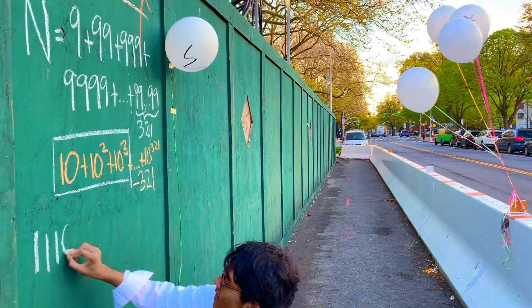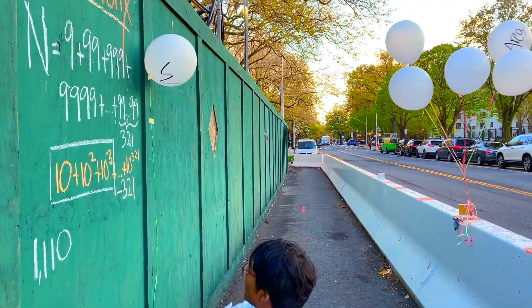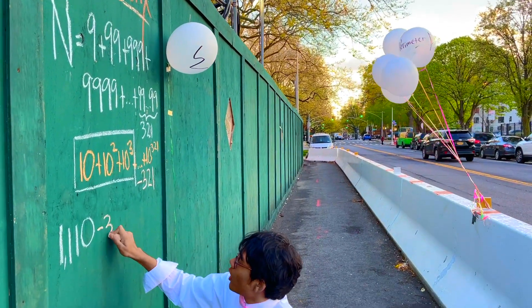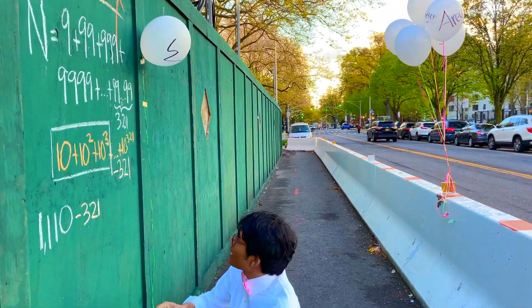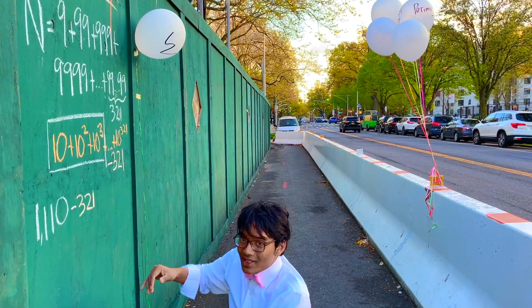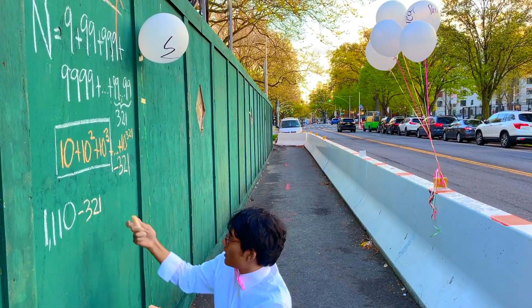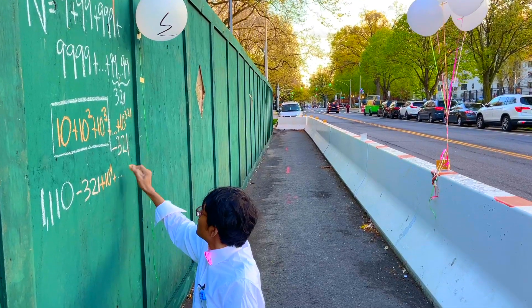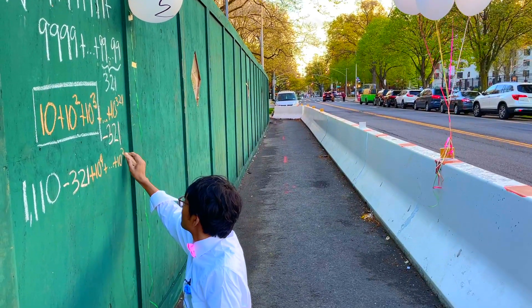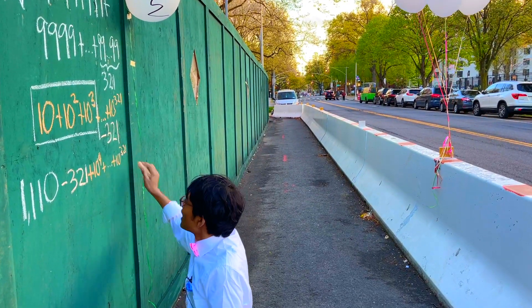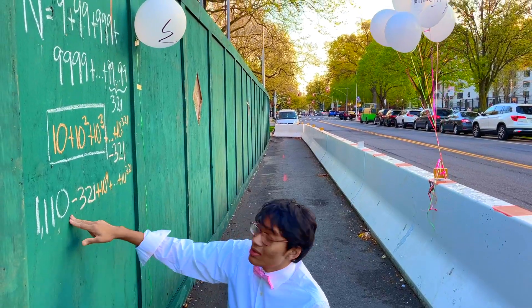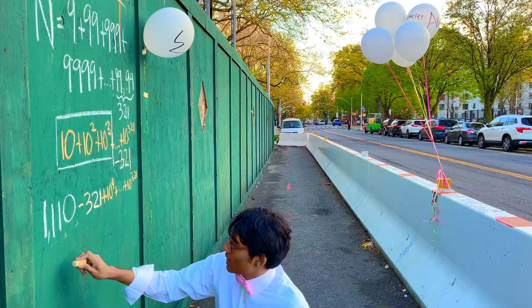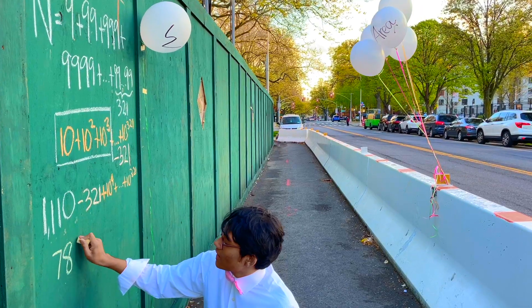So what's 10 plus 10 squared plus 10 cubed? Well, that's 1110 minus 321. And then we're just going to add on the remainder of the series — plus 10 to the 4th, all the way to 10 to the 321st. So now what's 1110 minus 321? Well, that's 789.